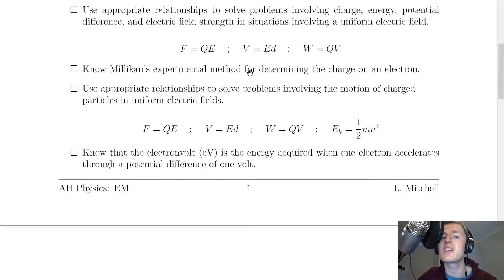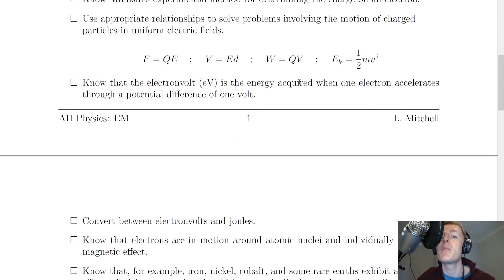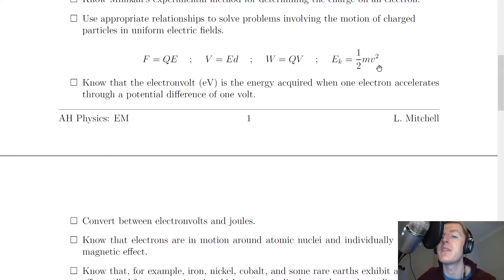Moving on, you need to know Millikan's experimental method for determining the charge on an electron — we go over this in the theory video on Millikan's oil drop experiment. Next, you need to use appropriate relationships to solve problems involving the motion of charged particles in uniform electric fields. The equations are: F equals QE, V equals Ed, W equals QV, and the kinetic energy of the particle: Eₖ equals half mv squared.